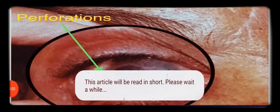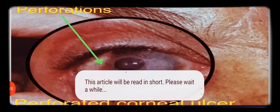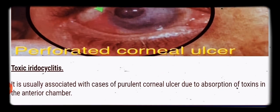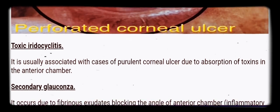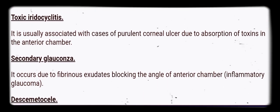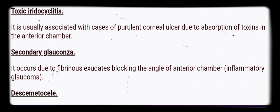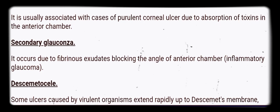Complications of corneal ulcer. Toxic iridocyclitis is usually associated with cases of purulent corneal ulcer due to absorption of toxins in the anterior chamber.